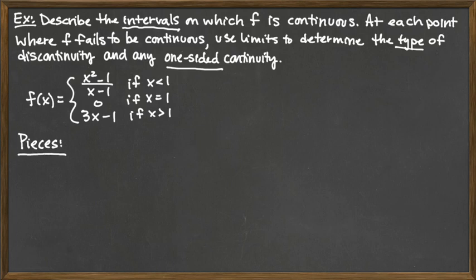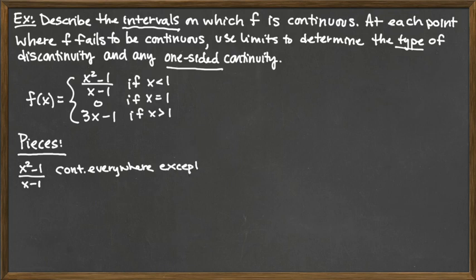The pieces here — it looks like we have three pieces, but truth be told, this middle piece is only defined at a single x value, so that middle piece is really just a single point. We're not going to need to look at that over an interval at all, so we really have two pieces. The first piece is x squared minus 1 over x minus 1. It's a rational function, and rational functions are continuous everywhere except where the denominator is 0.